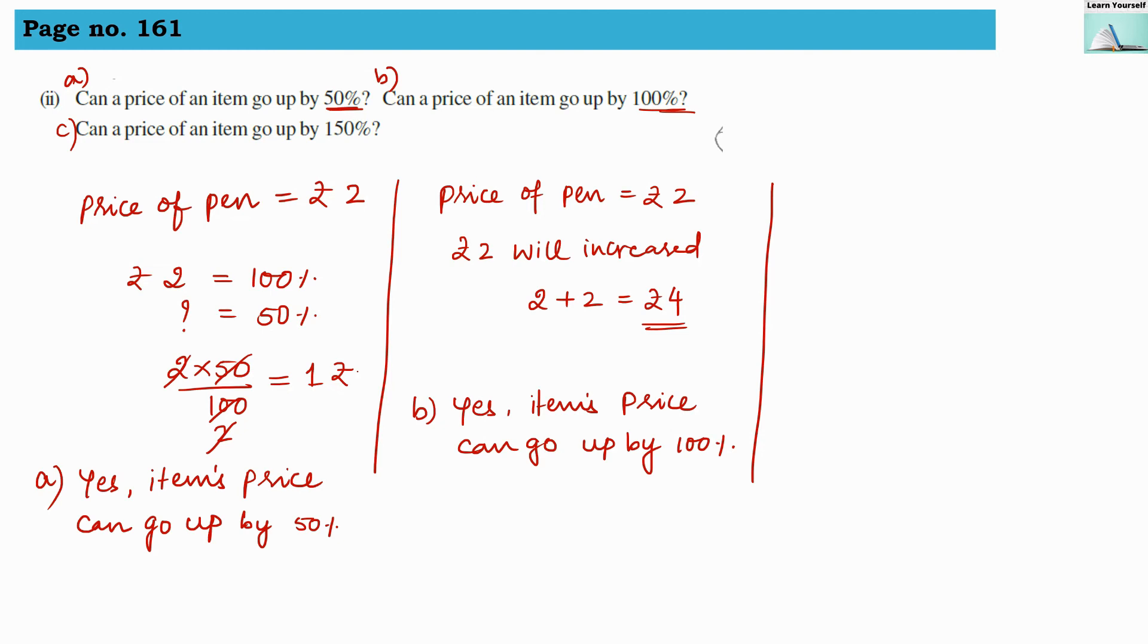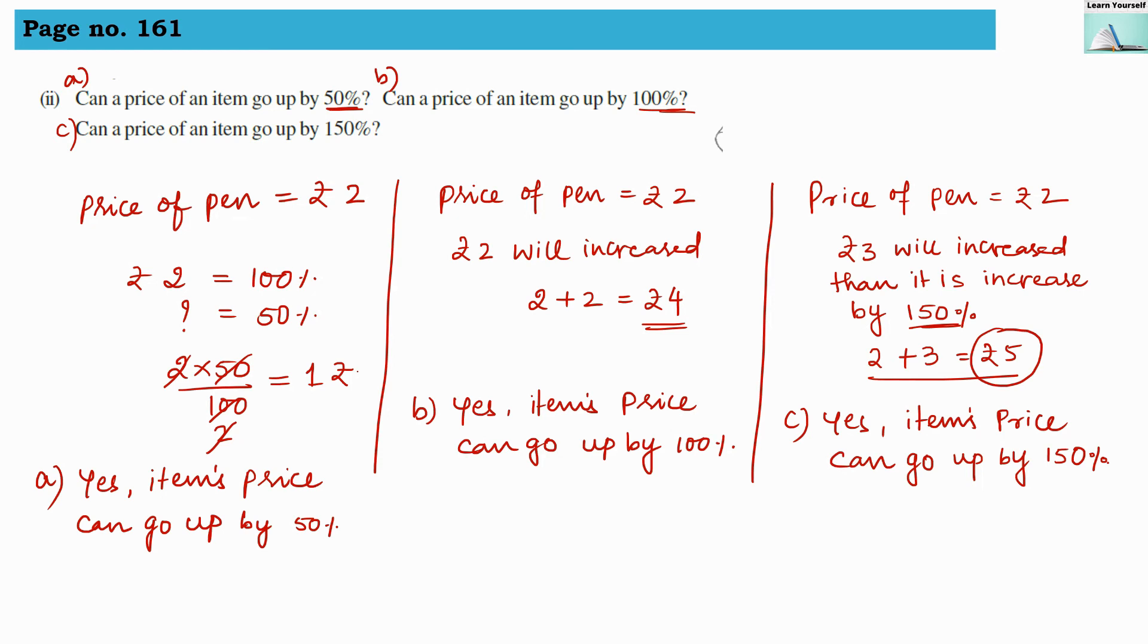Now let us see for the C question. Can price of an item go up by 150%? So when price of pen is 2 rupees and 3 rupees will increase, then it is increased by 150%. So when price will be 5 rupees of a pen from 2 rupees, it is increased to 5 rupees, at that time the price hike is 150%.